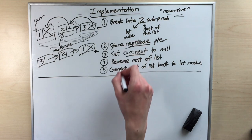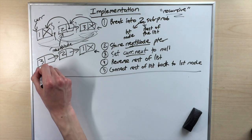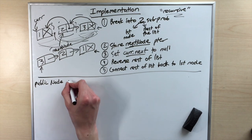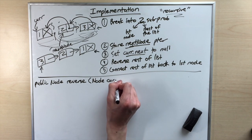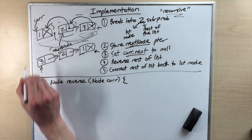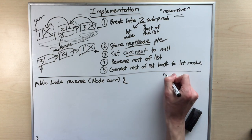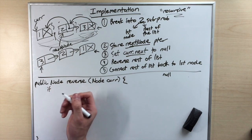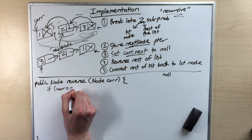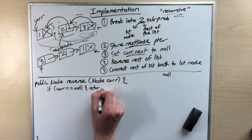Let's look at a code implementation. We have public node reverse, taking in a pointer called cur, because they always give us the pointer to the first node in our given linked list. Let's think about the possible cases. They could give us null — the null reference is technically of node type, so we have to account for it. If cur equals null, you can't reverse null, so all you have to do is return null.